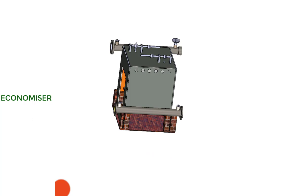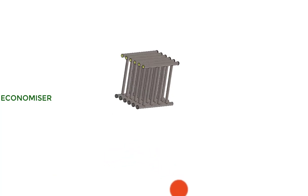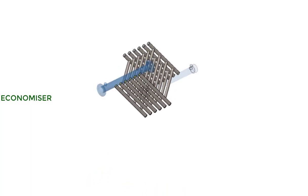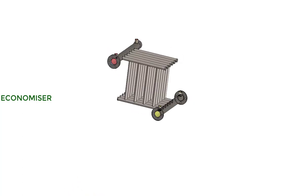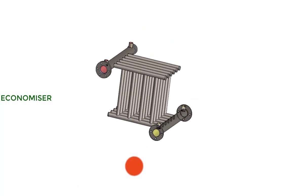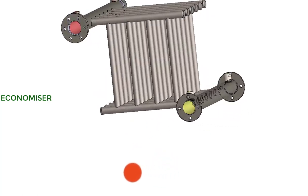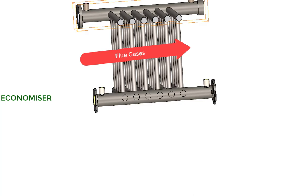The hot gases move across the vertical tubes. There are also horizontal tubes — these can be called sub-headers — which are connected to the main headers. These are the two main headers: one top header and one bottom header. Water moves from bottom to top through the vertical tubes, which are exposed to the hot gases passing from the combustion chamber to the chimney.